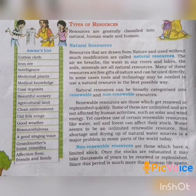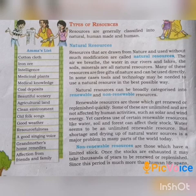Renewable resources are those that can be replenished. If we use this stock, this place gets refilled — that is the nature of a renewable resource. Examples include solar and wind. These have a strong, ongoing stock.